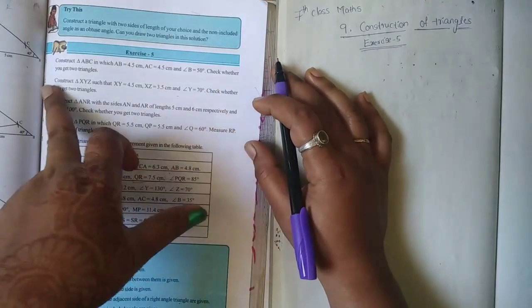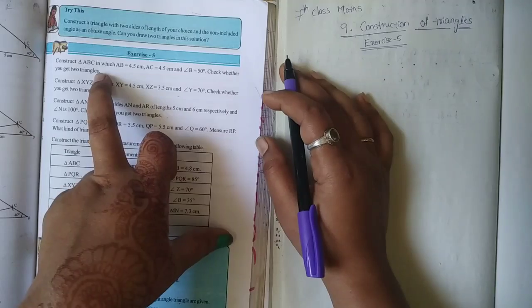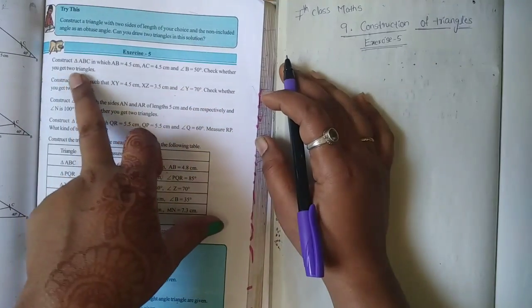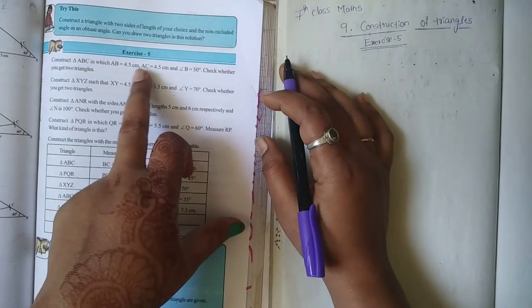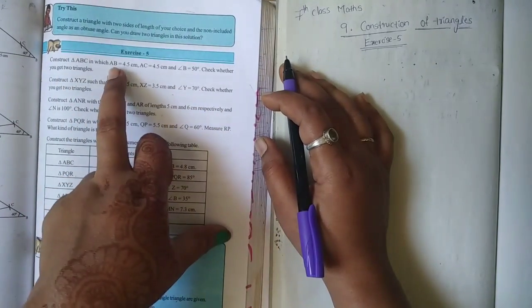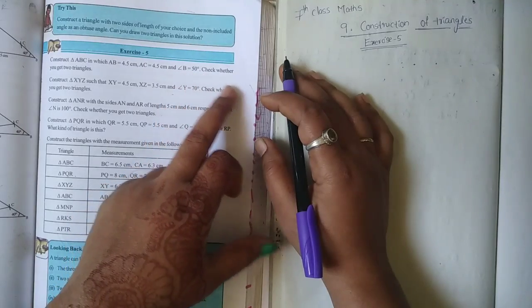Check whether you get 2 triangles. Here we have 3 measurements — 2 sides and 1 angle.